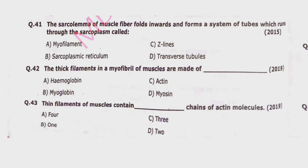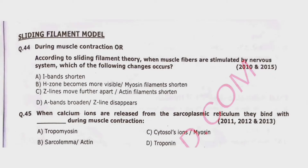Question 42: The thick filaments in a myofibril of muscle are made of hemoglobin, myoglobin, actin, or myosin. Correct option is delta — myosin. Question 43: The thin filaments of muscle contain how many chains of actin molecules — 4, 1, 3, or 2? Correct option is delta — 2.